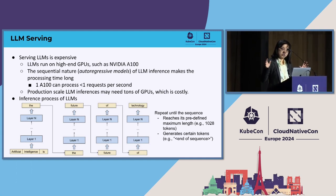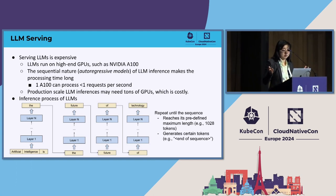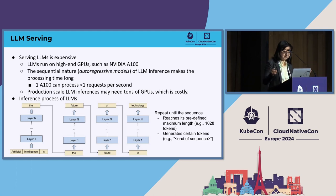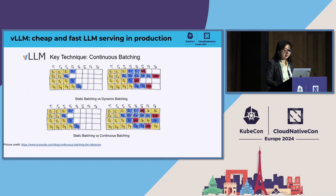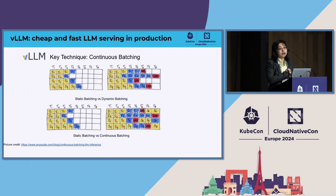This sequential nature makes generation time long. With one A100, you can process less than one request per second. In production use cases you may have hundreds of thousands of applications querying this large language model. You can imagine how many GPUs you need and how much that costs. That's why we're introducing vLLM, an open source framework for production-scale large language model serving, because of two key optimization techniques.